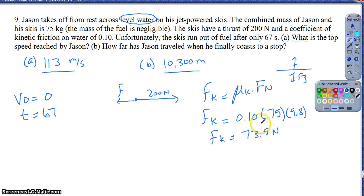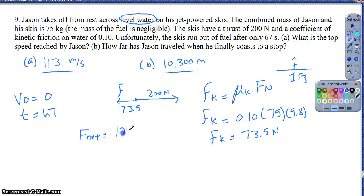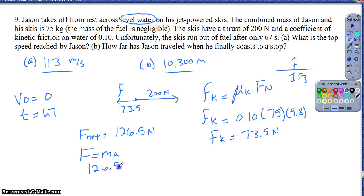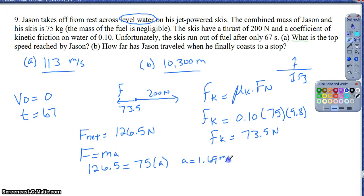So 73.5 newtons are working against the 200 newtons of thrust. My net force is just the difference between these two: 200 minus 73.5, so 126.5 newtons. Then using F = ma, 126.5 equals 75 times the acceleration, so solving for acceleration I get about 1.69 meters per second squared.